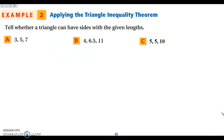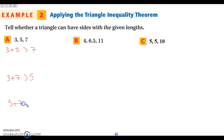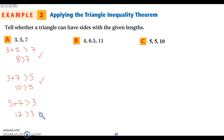In example two, we have three sets of numbers to check. For 3, 5, 7: three plus five is eight, which is greater than seven — true; three plus seven is ten, greater than five — true; five plus seven is twelve, greater than three — true. So these segments can make a triangle.